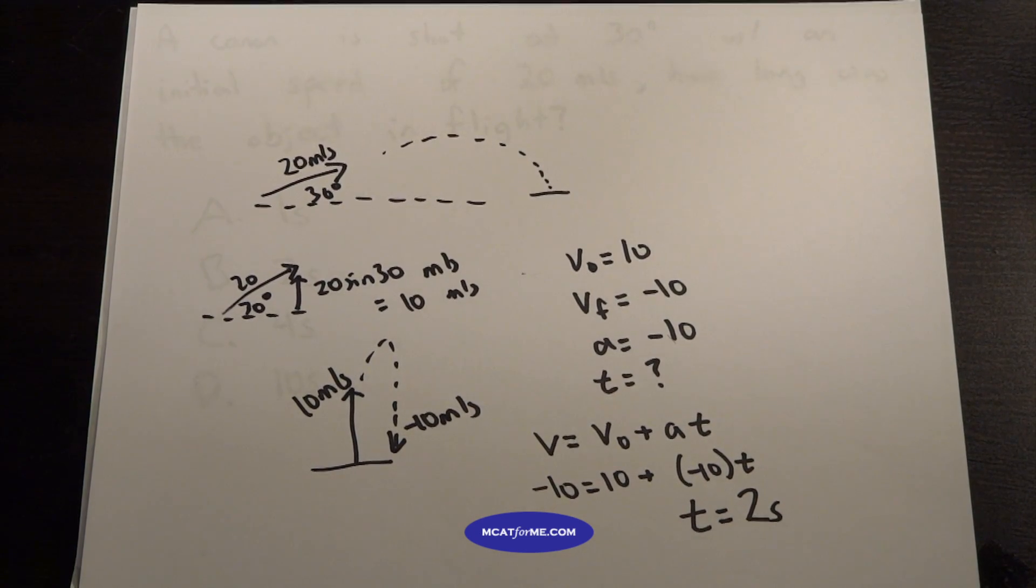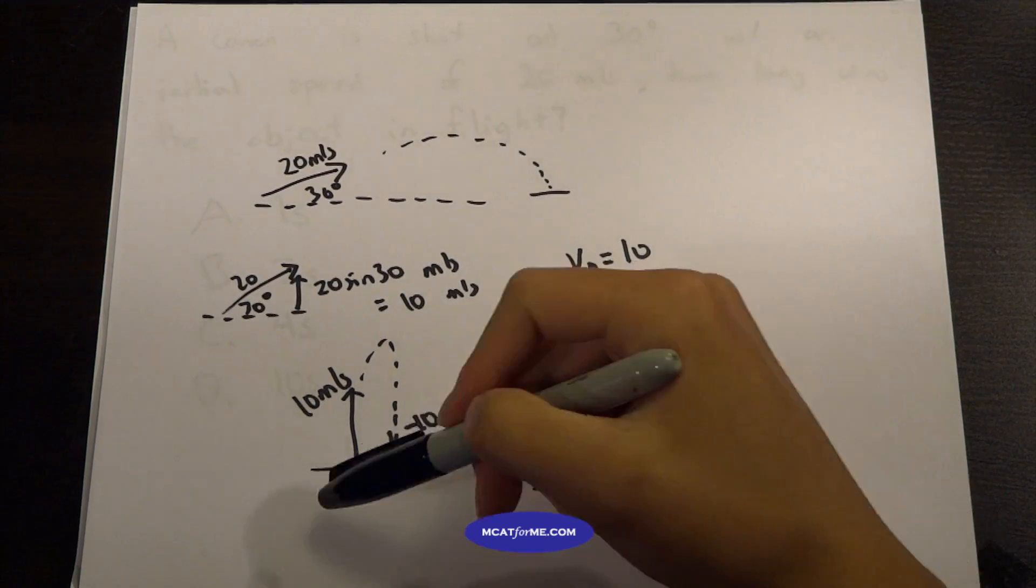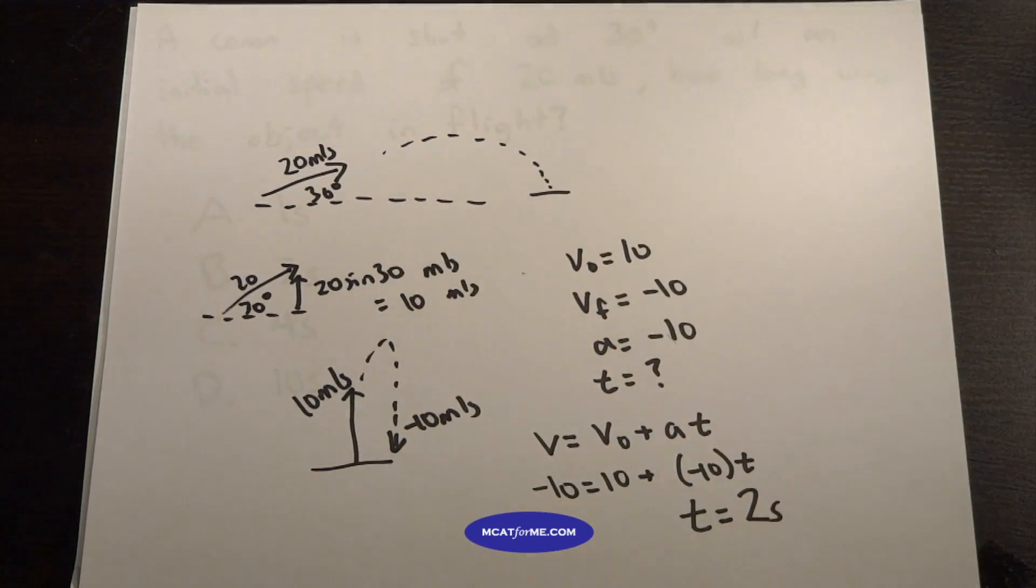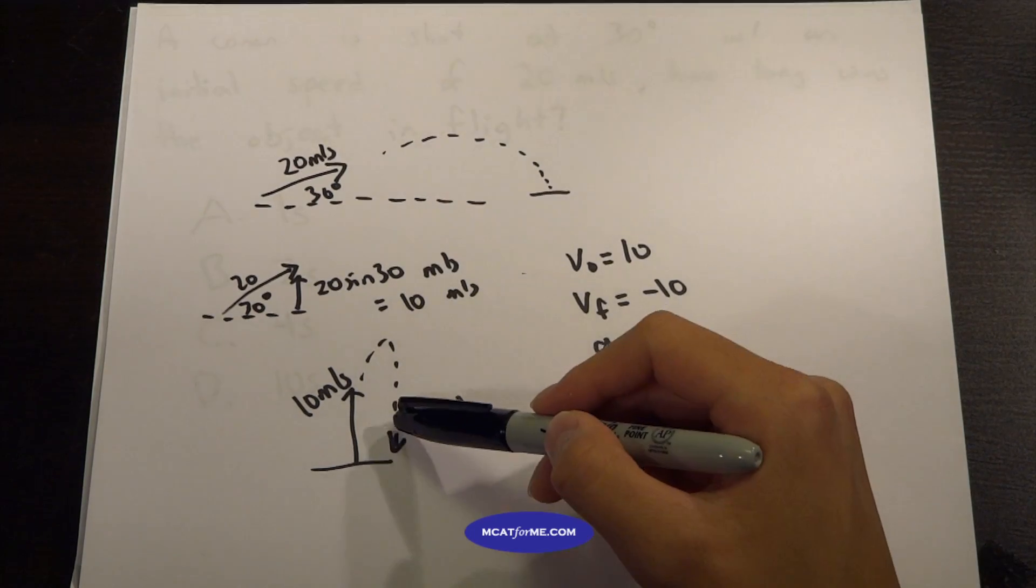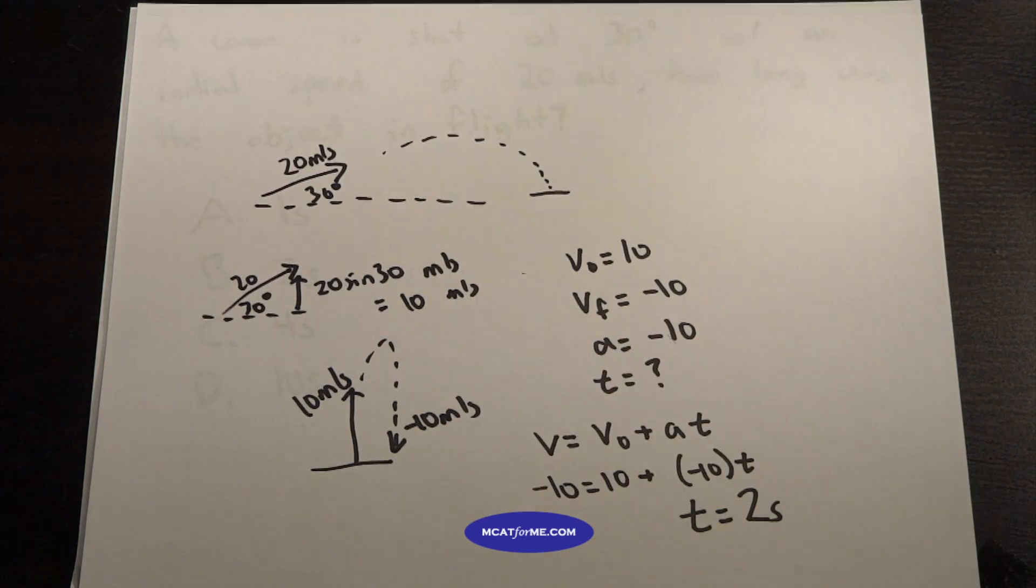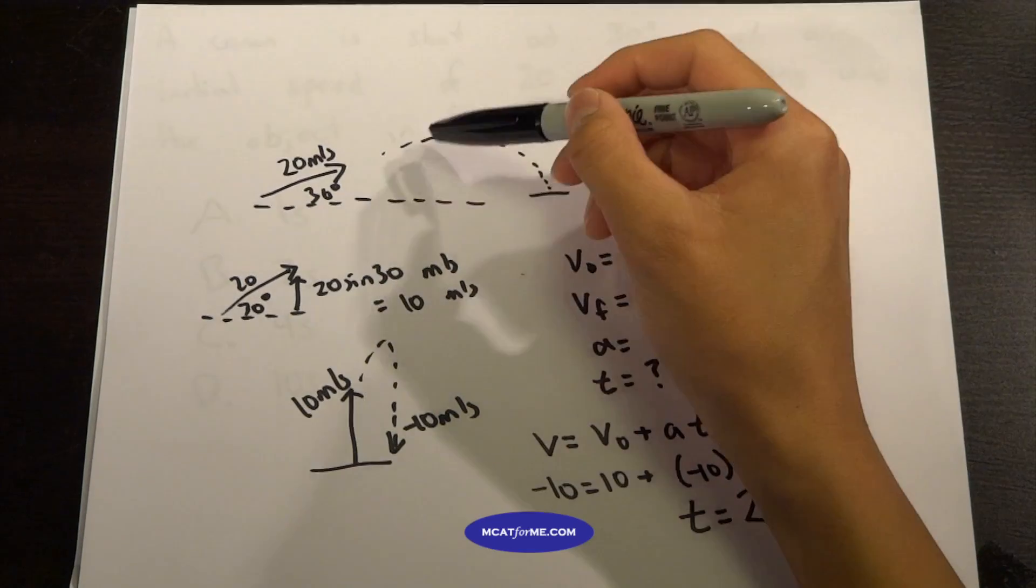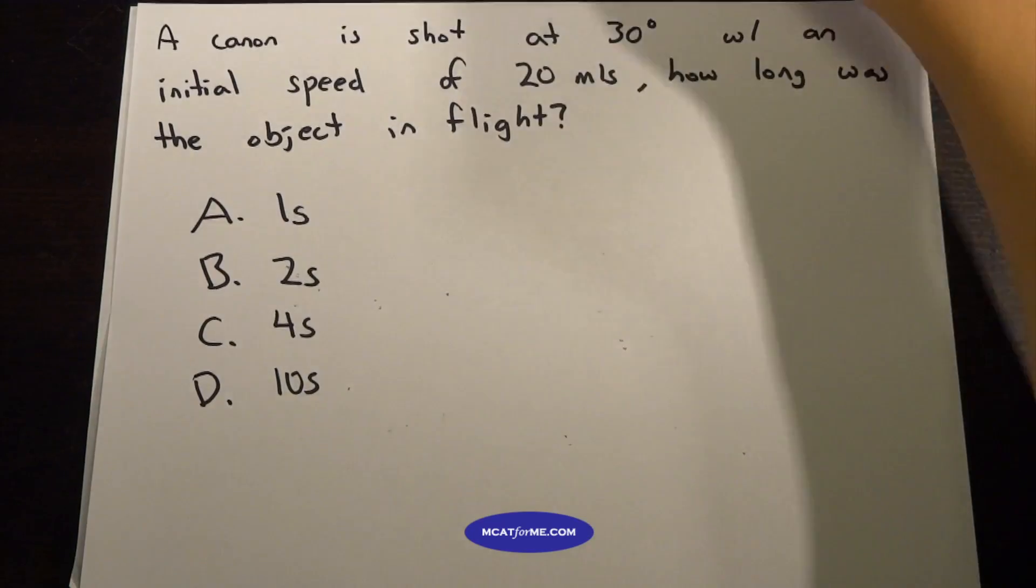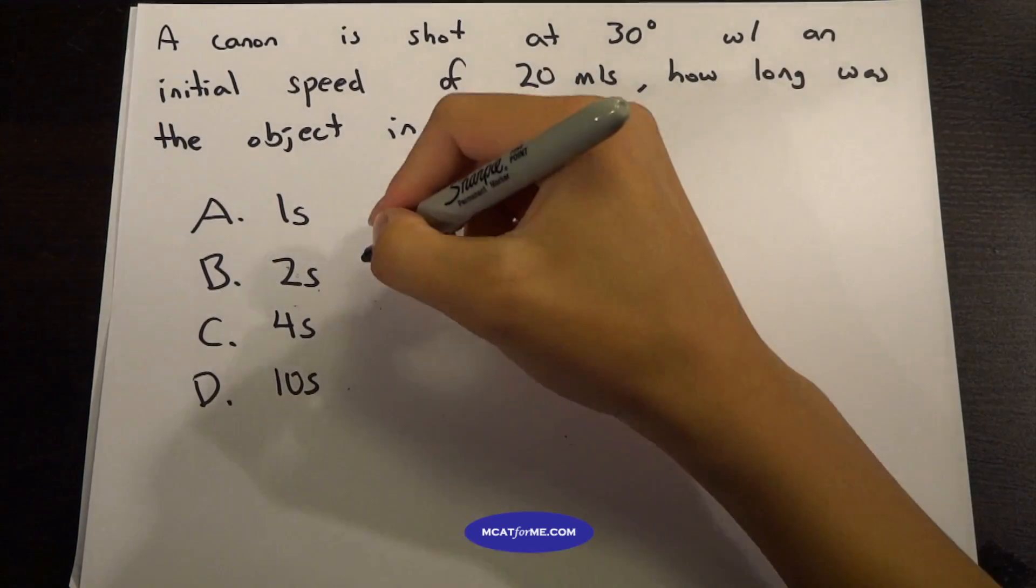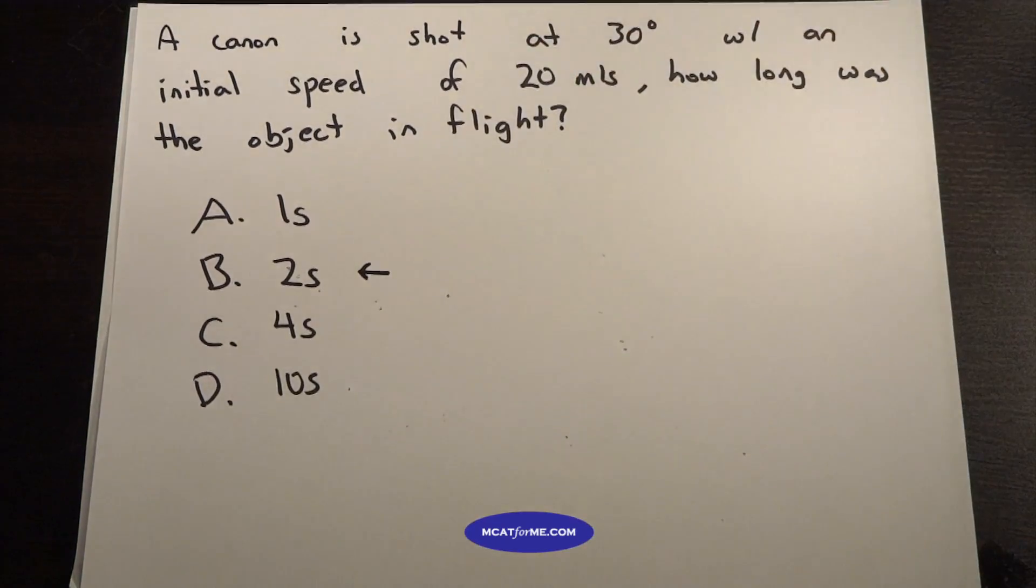And we have to ask ourselves, is this the time it takes for it to go all the way up or just halfway? And we know this is the time it takes to go all the way back down because our final velocity is negative 10. Whereas if it was just halfway to this point right here, we would have said VF equals 0. And so if we look back on our answer choices, we see that B is the correct answer.